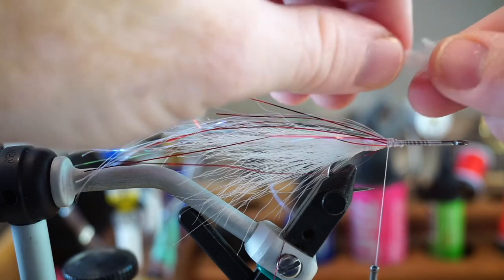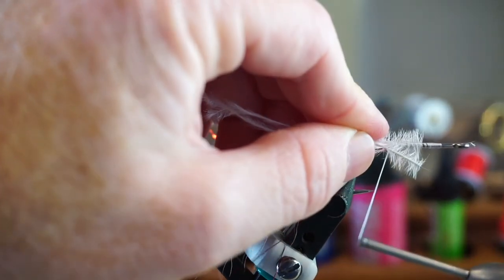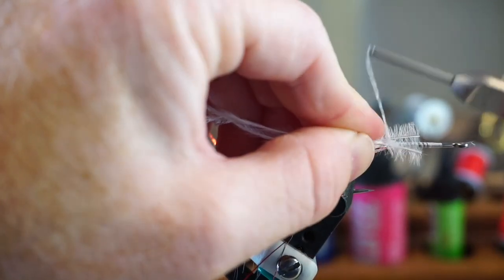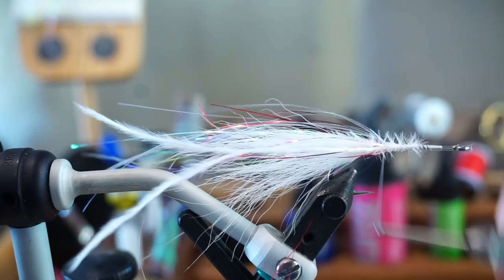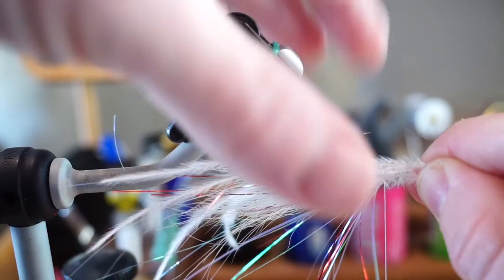Tie two of the strands on one side of the fly, so they extend back to about the same as the flashaboo. Then tie the other two on the other side of the fly.